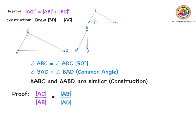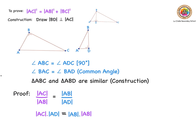All I'm going to do is tidy that up and cross multiply. That gives me AC times AD is equal to AB times AB. Tidying that up further gives me: AC times AD is equal to AB squared.